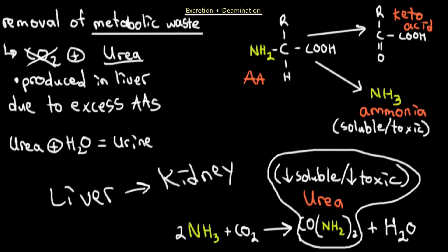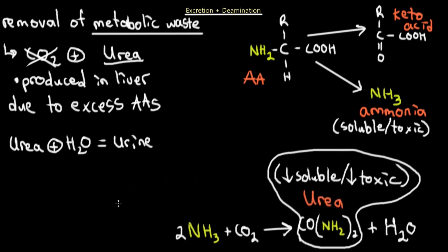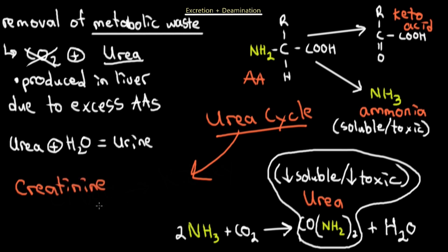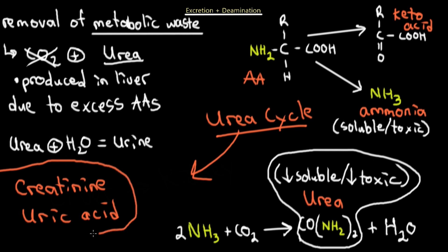Additionally, during the urea cycle we also produce creatinine from excess creatine from the muscles, and we produce uric acid, which is made from the breakdown of purines — a type of nucleotide discussed in a previous lecture. Keep in mind these two waste products as well, because they will be excreted from the body and filtered out by the nephron and kidneys, though they are not made in such large quantities as urea.